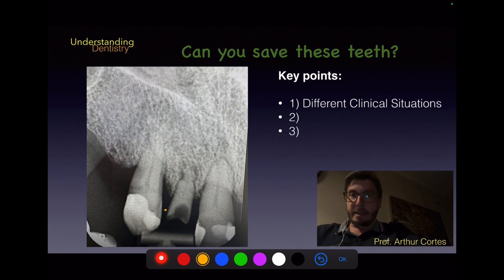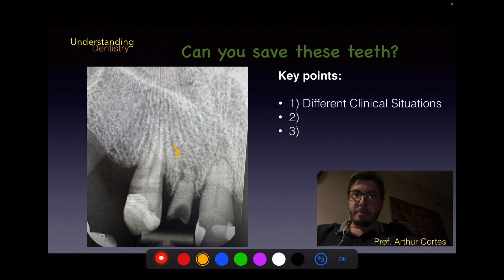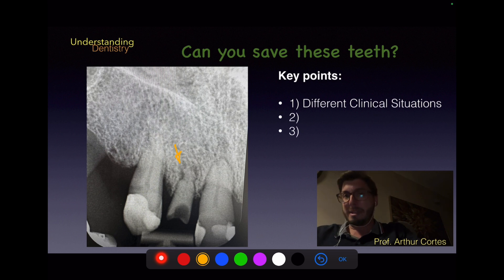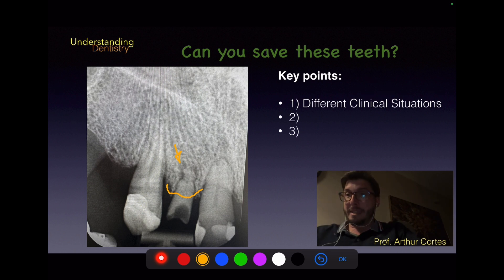Now for the lateral incisor: there is no restoration, the crown is missing, the pulp chamber is exposed, and there is no root canal treatment. We can see a periapical radiolucency — periodontal ligament space widening has progressed to the beginning of a periapical granuloma, also with external root resorption. Look at the dimensions of this root and the bone level.